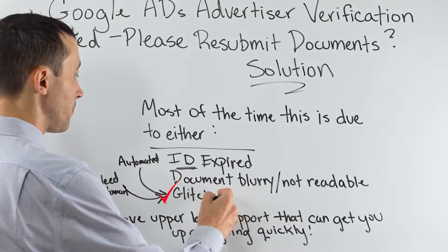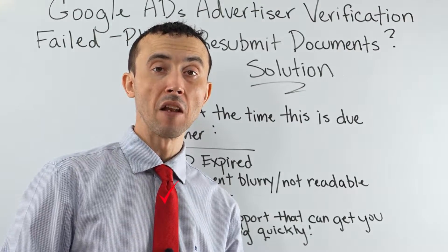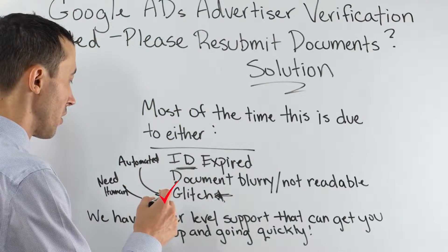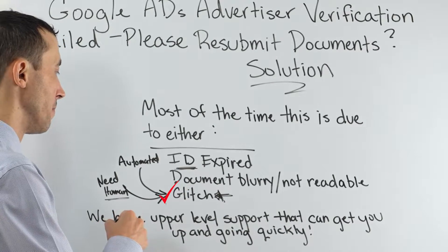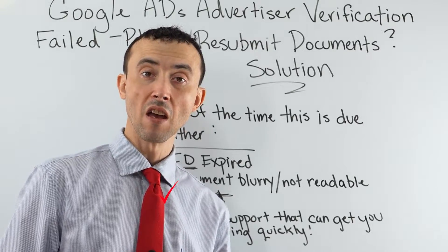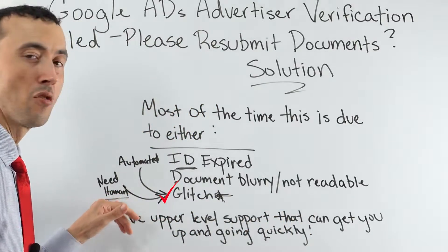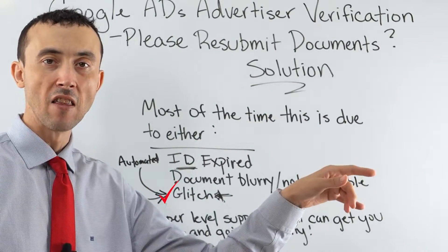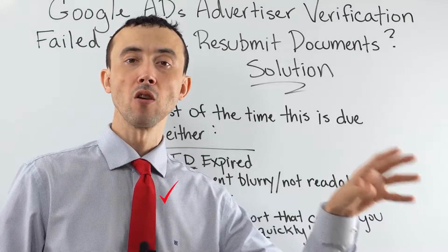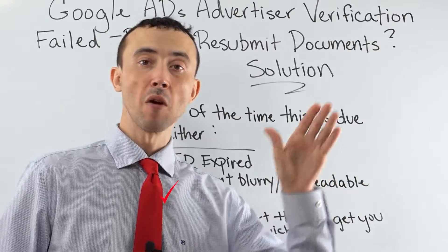The third reason you get rejected is a glitch in the automated system Google uses to read submitted documents. Even if you submit the documents correctly — as good a document as you can submit — it still gets rejected. In that case, you need a human to look at the document. Unless you want to try submitting another document, you could reach out to someone who has contacts at Google on your behalf.